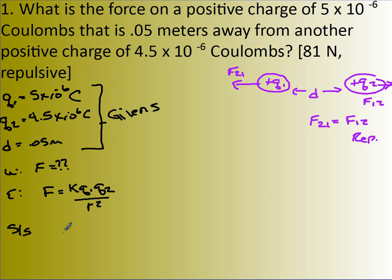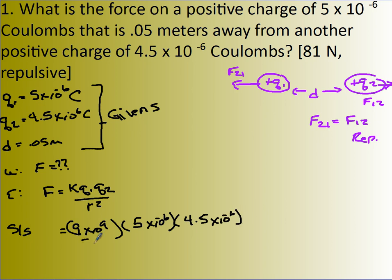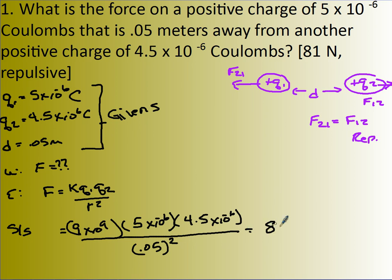Now plug the numbers in: 9 times 10 to the 9th times 5 times 10 to the negative 6 times 4.5 times 10 to the negative 6, divided by 0.05 squared. Multiply 9 times 10 to the 9th times 5 times 10 to the negative 6 times 4.5 times 10 to the negative 6 divided by 0.05 squared in your calculator, and you get 81 newtons.